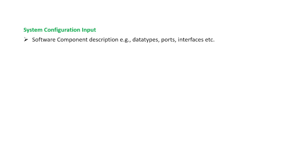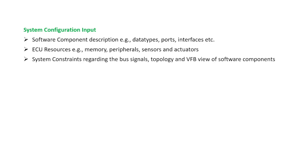So what are the inputs that go as part of system configuration? We have the software component description of IOs, data types, ports, and interfaces. These are all defined by the OEM based on their project needs. Then you will have ECU resources like memory, peripherals, sensors, and actuators — basically giving an idea of what peripherals are used in the system and what memory constraints exist. And we have system constraints like the bus signals, topology, network management information, and also VFB view of software components. VFB view gives an overall picture of the software components in a system.